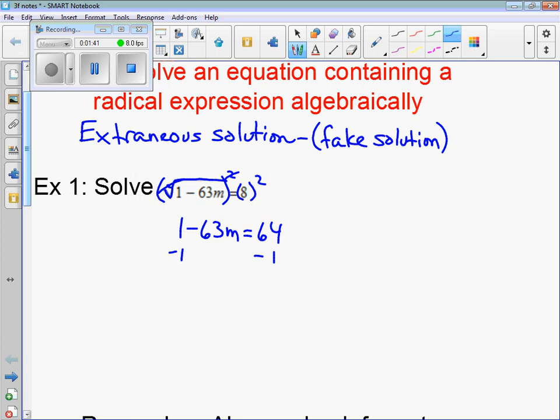Subtract 1 from both sides, negative 63m is equal to 63. Divide by negative 63, m equals negative 1.